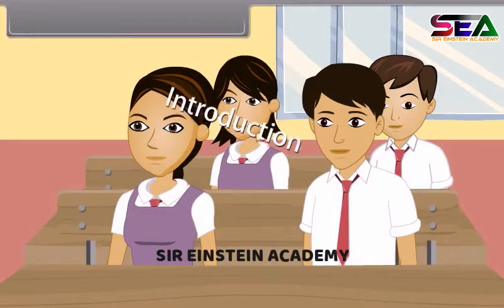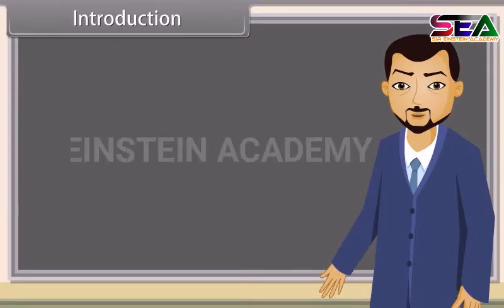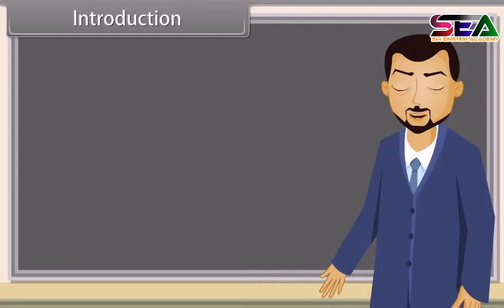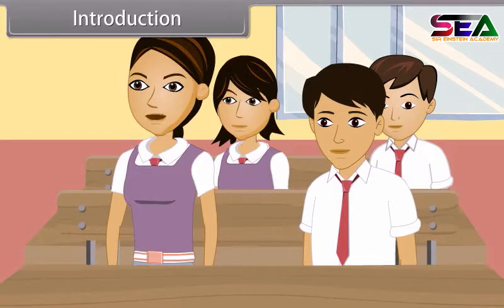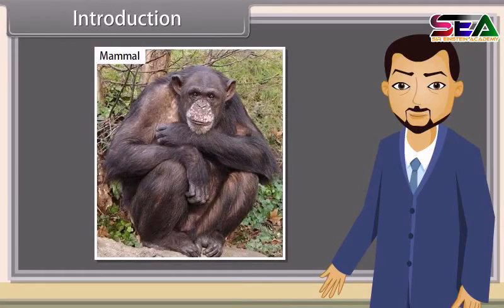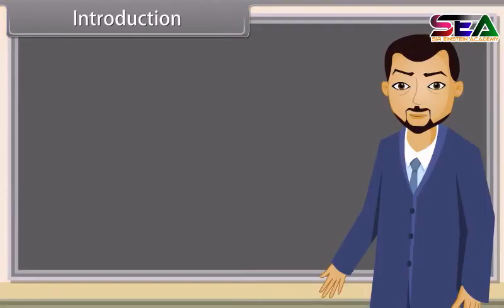Good morning teacher, good morning students. Today we will learn about organisms and their population. Can anybody tell me what our organisms are? Organisms are the living things that are capable of reacting to stimuli, reproduction, growth and homeostasis. The examples of organisms are mammals, birds, bacteria, fungi, etc.